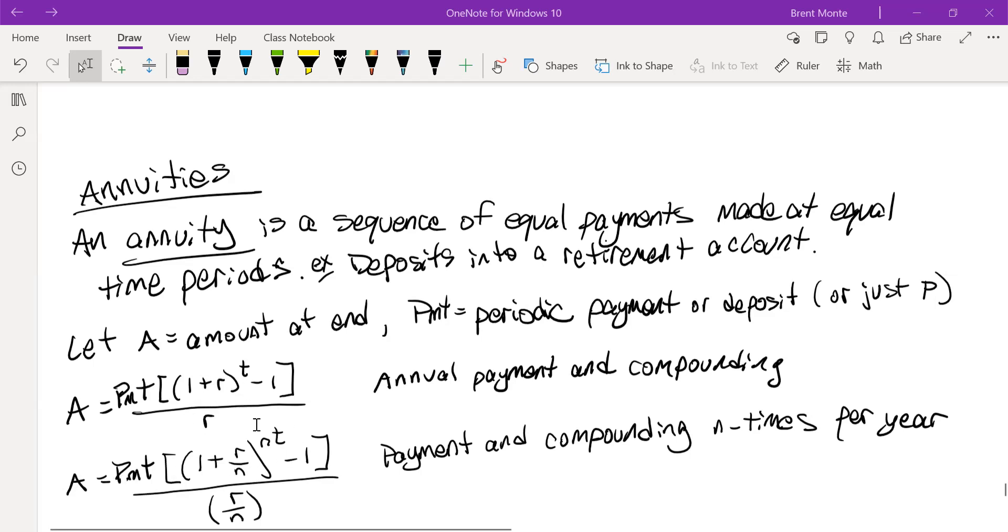Just like our compound interest formula before with the periodic N times a year compounding, we have R divided by N a couple times, and then N times T as our exponent.